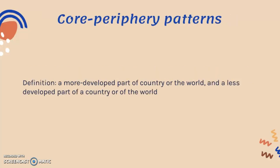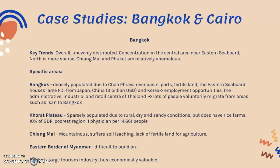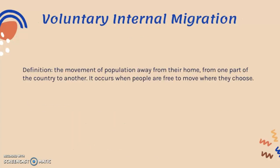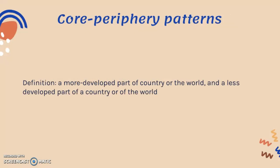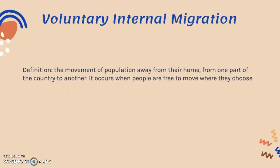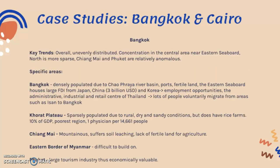Core-periphery patterns are based on the core-periphery model, which shows a more developed part of a country or the world — the core — and the surrounding less developed part — the periphery. There are two case studies for both voluntary internal migration and core-periphery patterns: Bangkok, representing Thailand, and Cairo, representing Egypt.